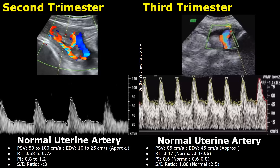In the third trimester, we will find a low resistance waveform. The range of PSV and EDV is similar to the second trimester. The normal resistive index range is between 0.4 and 0.6 — in this example it is 0.47, so that is normal. The pulsatility index can be between 0.6 and 0.8 — in this example it is 0.6. The SD ratio is usually less than 2.5; in this example it is 1.88, so that is normal.